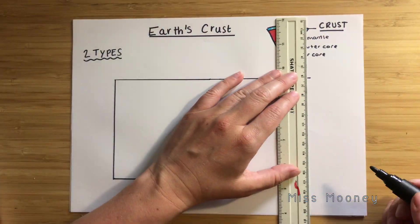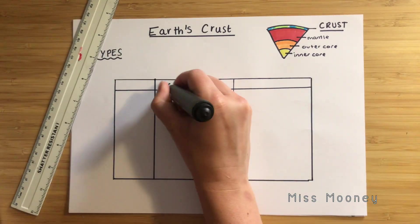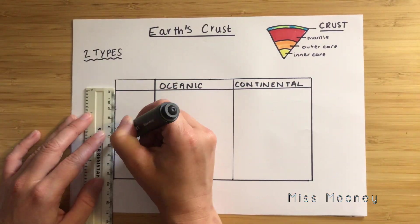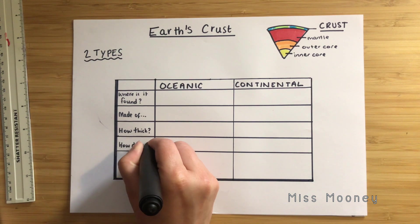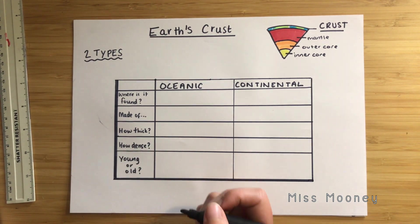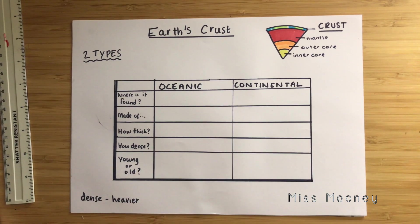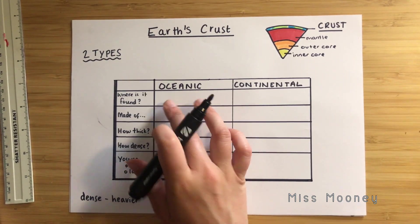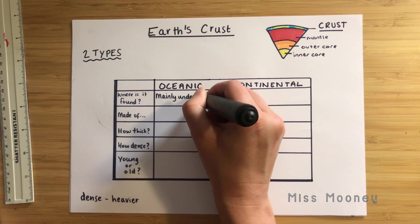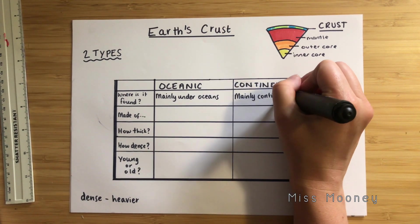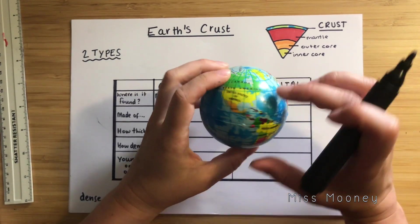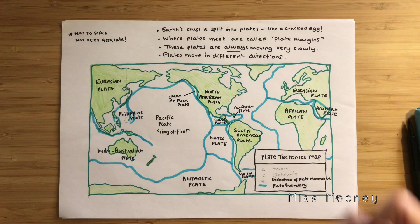Draw yourself a table with the headings oceanic crust and continental crust, and we want to know: where is it found, what is it made of, how thick is it, how dense is it, and is it younger or older? Oceanic crust is mainly found under the ocean and continental crust is mainly found where we have our continents. For example, the South American plate is continental crust and the Nazca plate is oceanic crust.